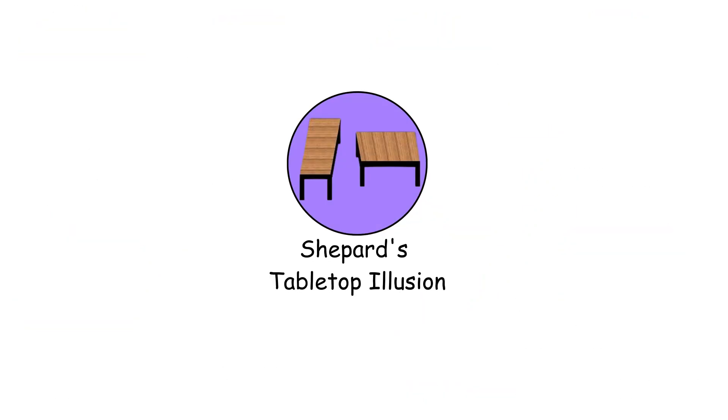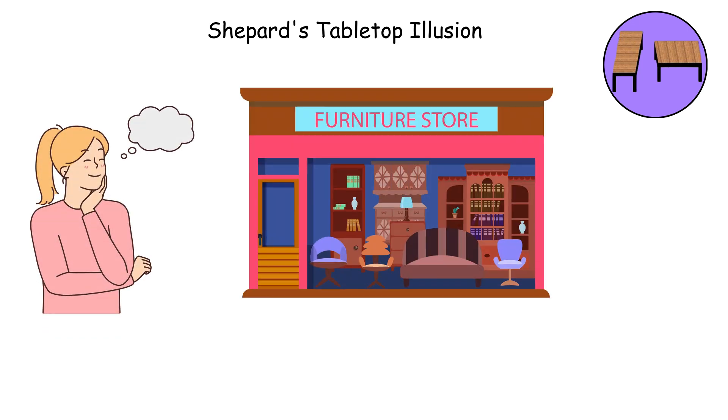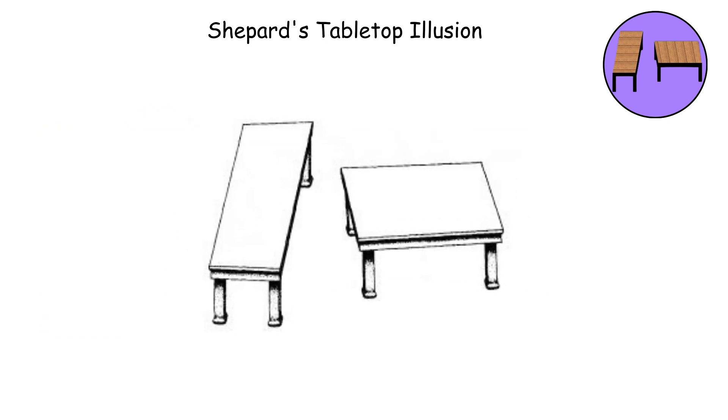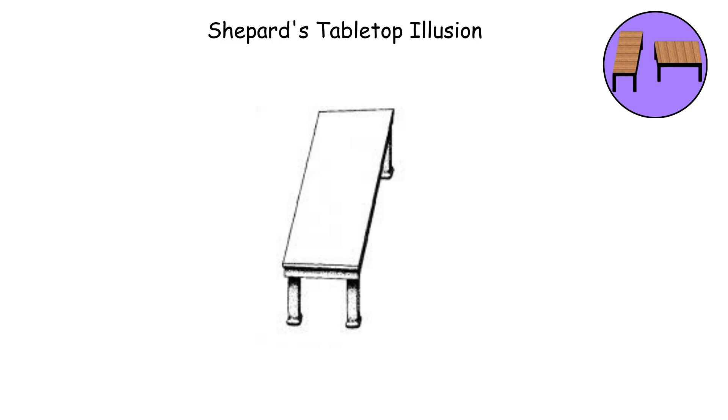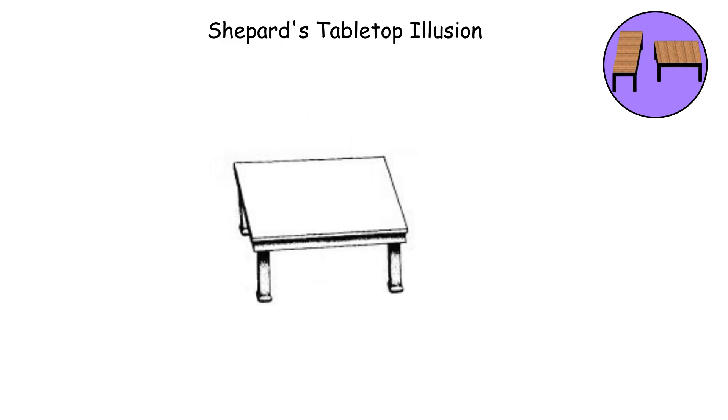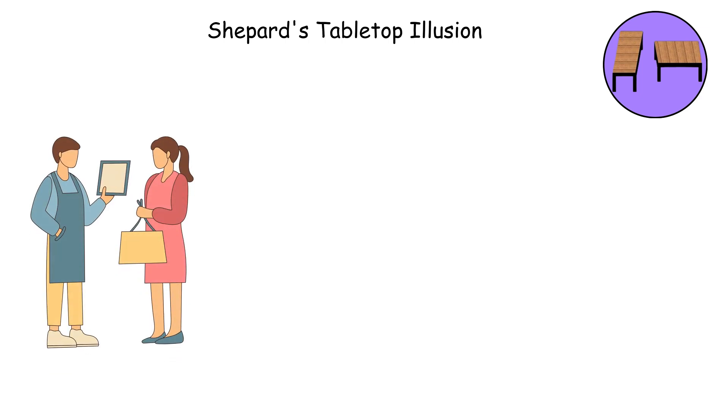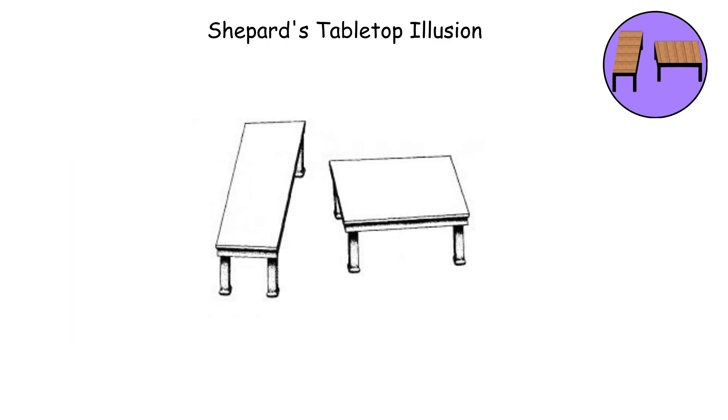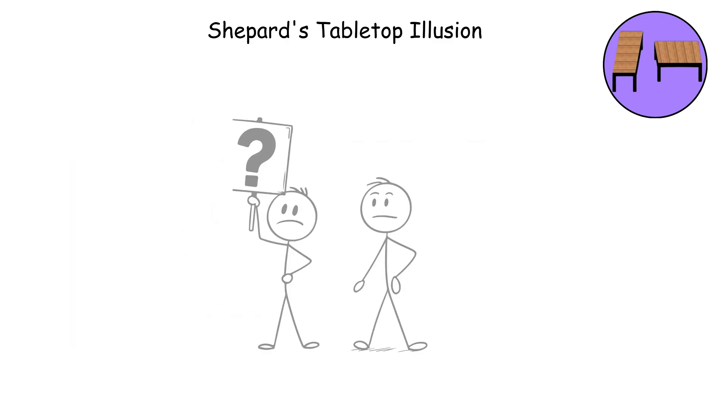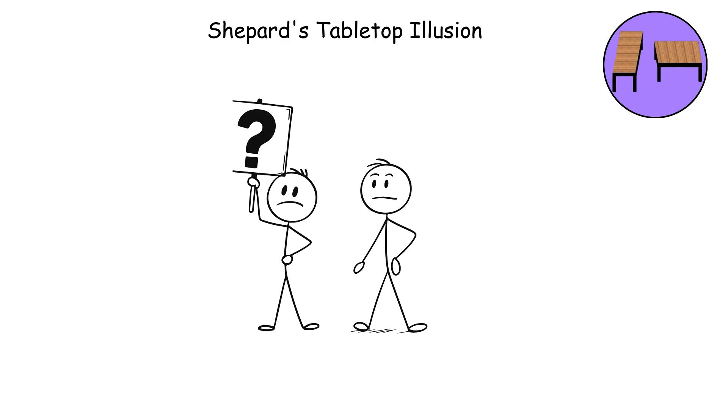The Shepard's Tabletop Illusion. Imagine you're furniture shopping, and you see two identical coffee tables, but one looks long and skinny, while the other looks short and wide. You're about to buy the long one because it fits your space better, but then the salesperson tells you they're literally the same table just rotated. That's the Shepard's Tabletop Illusion, and it'll make you question every furniture decision you've ever made.